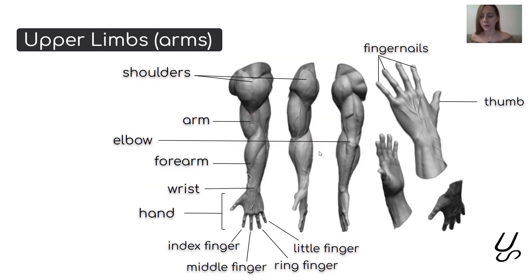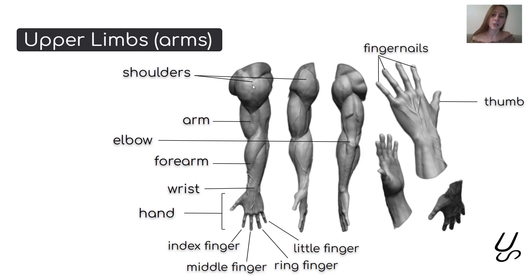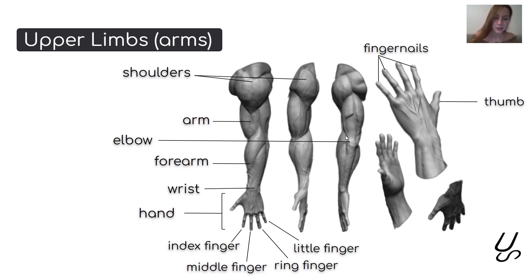Let's go further — upper limbs, or arms. Our arms are attached to the shoulders, so here we have the shoulder complex. Beneath this area we can see the armpit, also called the underarm. The upper arms have muscles known as the triceps and biceps. Here you can see the joint.